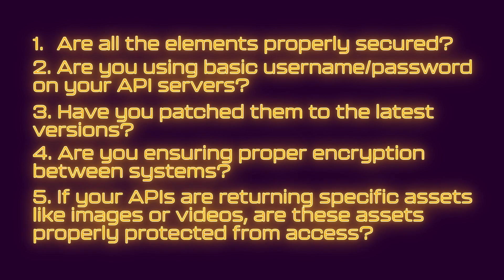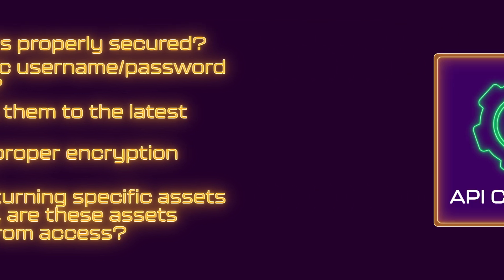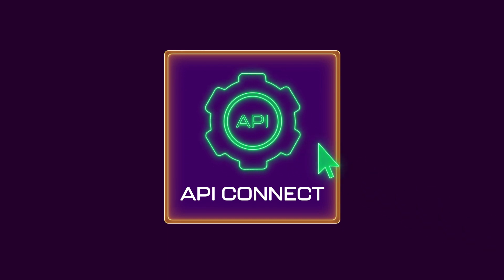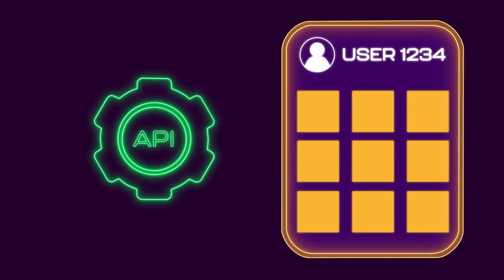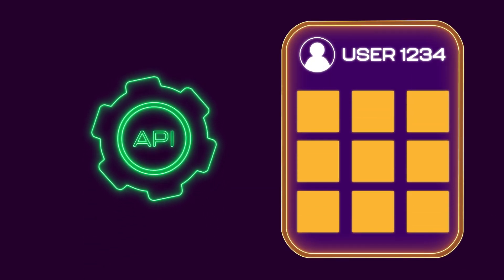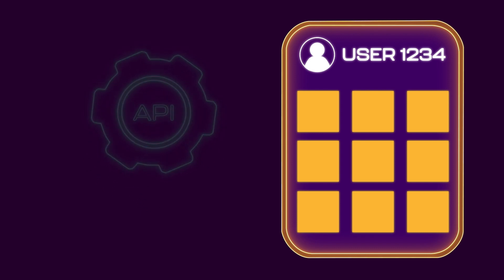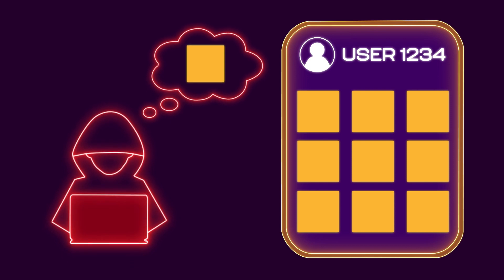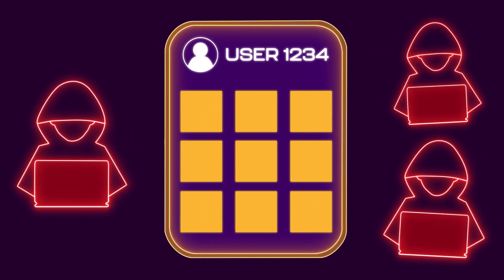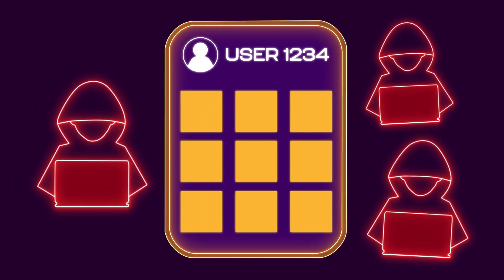If your APIs are returning specific assets, like images or videos, are these assets properly protected from access? Think of a social media website. Your API stores links to images of a user and handles them all securely, but the repository itself where the images are stored is actually a publicly available repository for anyone to request images from. Make sure these components are properly locked down from unauthorized access.